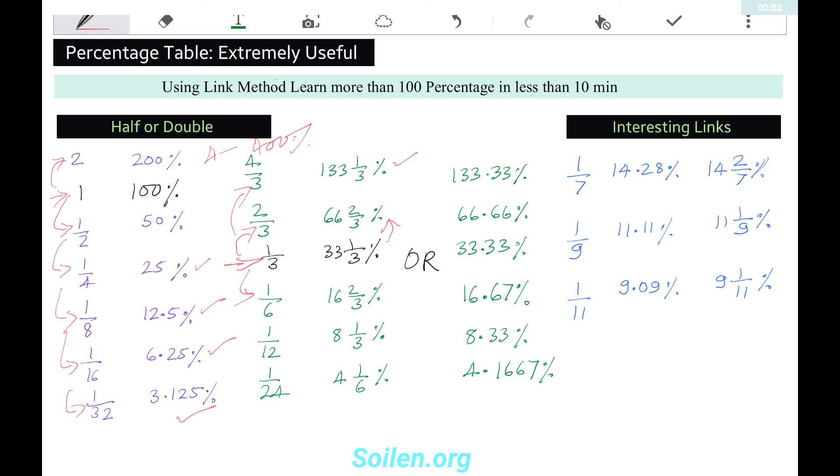Half of 1/3 is 1/6, which is 16 and 2/3 percent, or 16.67%. Half of this is 1/12, which is 8 and 1/3 percent. Half of that is 1/24, which is 4 and 1/6 percent.